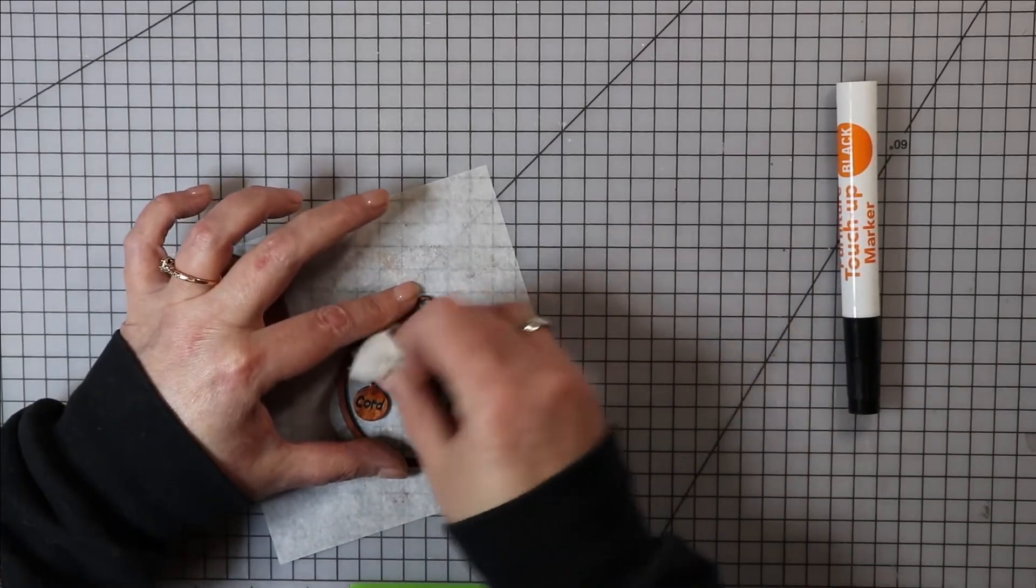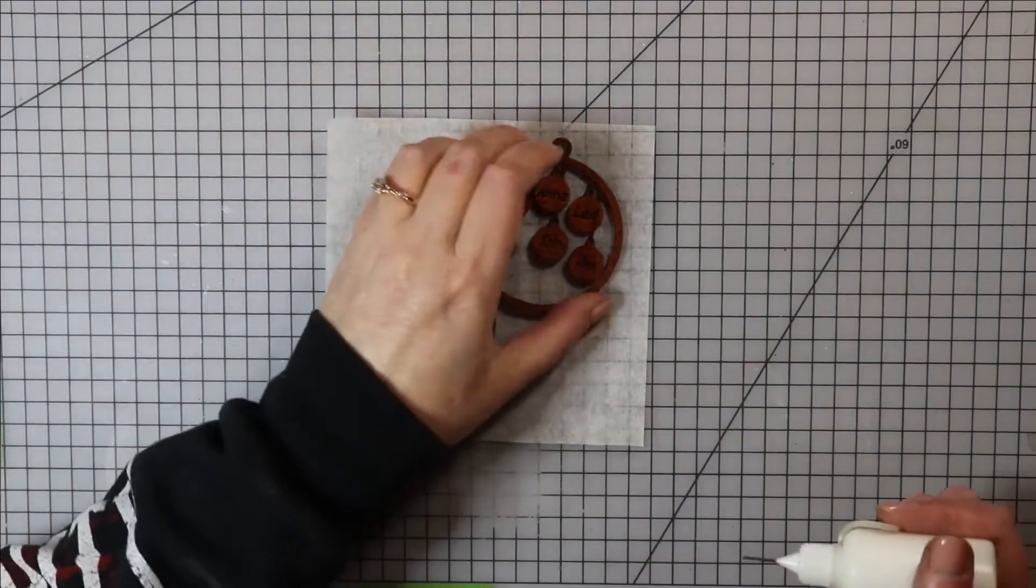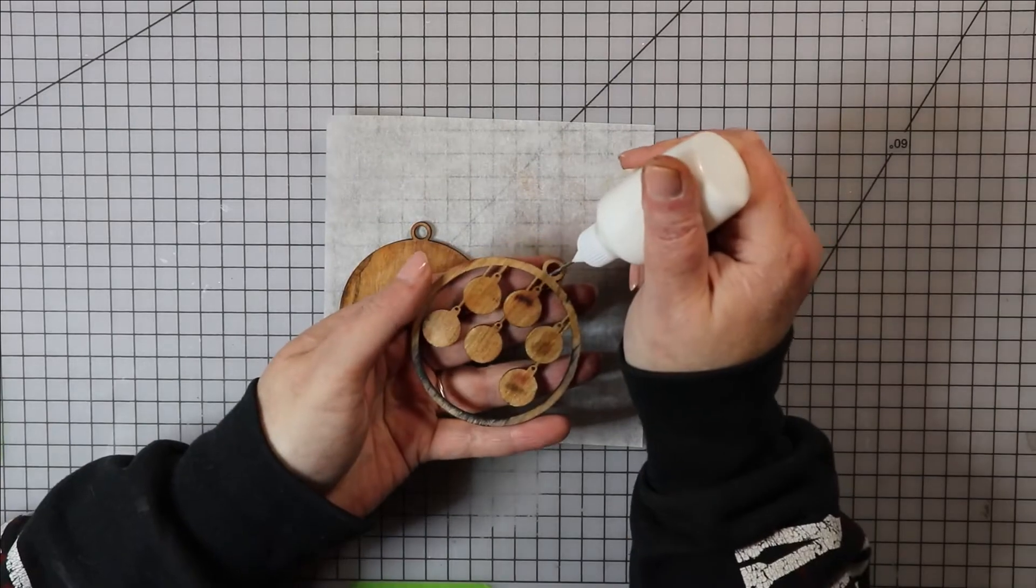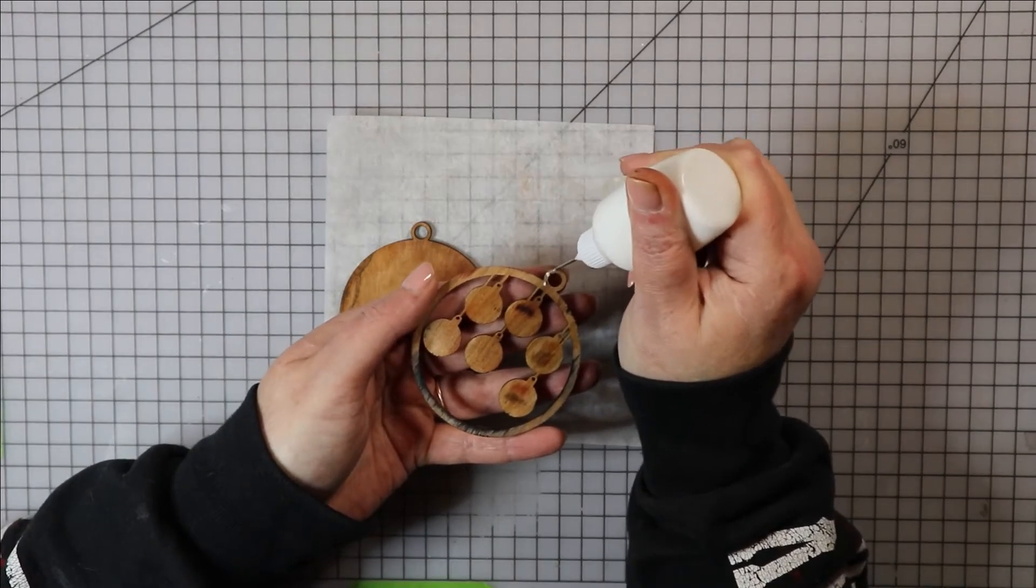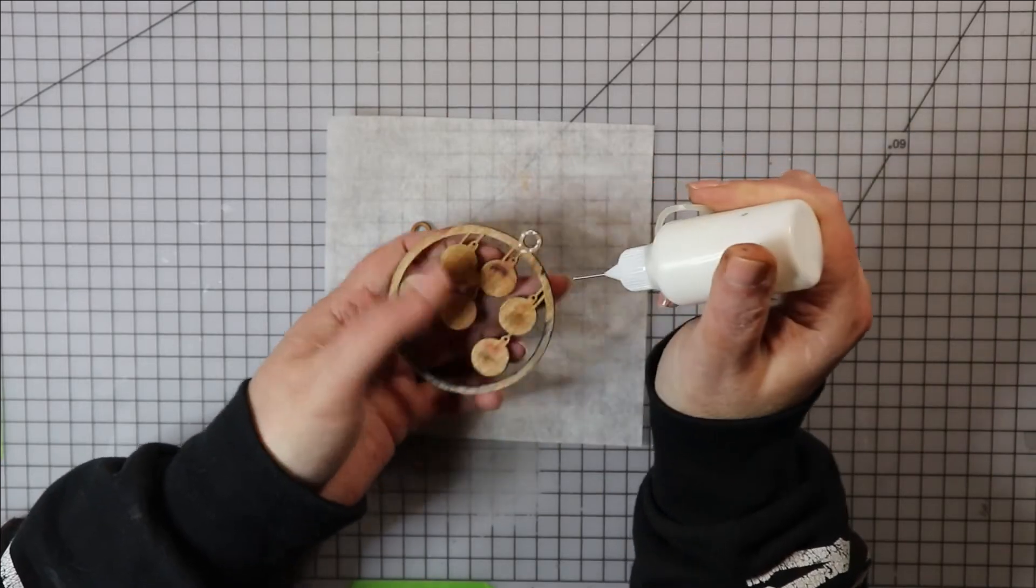I glued my ornament together before I stained the back of it because I wanted to stain the back and edges at the same time. Because I was using a really dark color, this is totally a preference thing—you do you, boo.